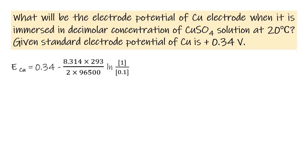This equals 0.34 - 0.01262 × 2.302, which is equal to 0.34 - 0.029.